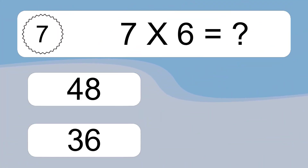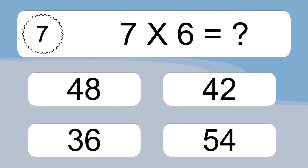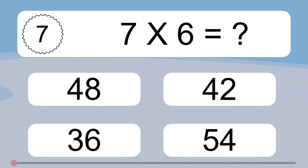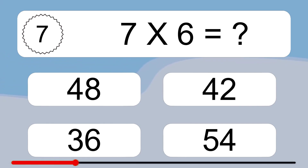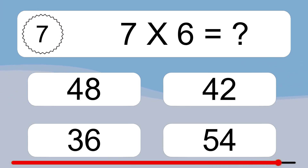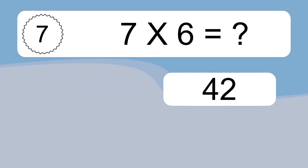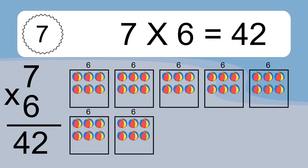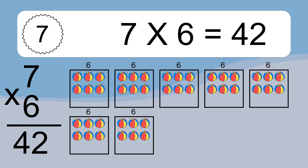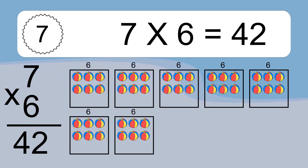7 times 6 equals what? 7 times 6 equals 42. We have 7 boxes, and each box has 6 colorful balls inside. If you count all the balls in all the boxes together, you will have 7 times 6 balls. This equals 42 balls.